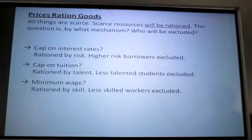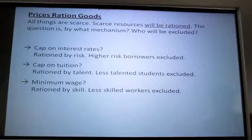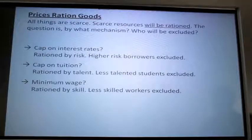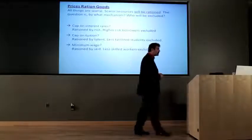The people who will be excluded are the high-risk people. If we put a cap on tuition, college admissions will be rationed by talent. The people who will be excluded are the less talented students. When we put a cap on wages — or in the case of minimum wage, it's a lower limit — jobs are rationed by skill. So less skilled workers are excluded from the job market.